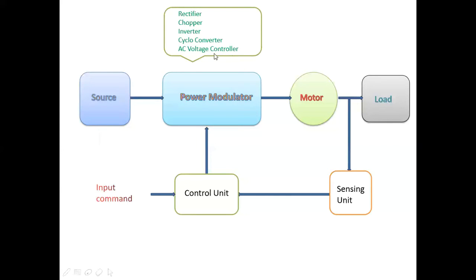To understand these converters, first we need to know the motor type, as motors are of different types — AC motor and DC motor. For example, if you take a DC motor, the output is DC, so you can use a rectifier (AC to DC) or a chopper (DC to DC). If the motor is AC, you use the remaining converters — for example, an inverter (DC to AC) or a cycloconverter.